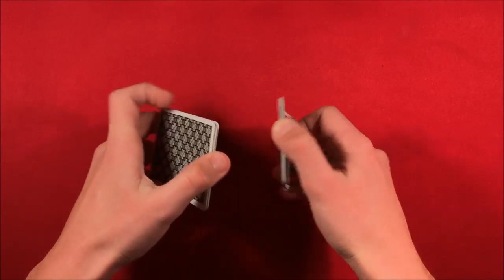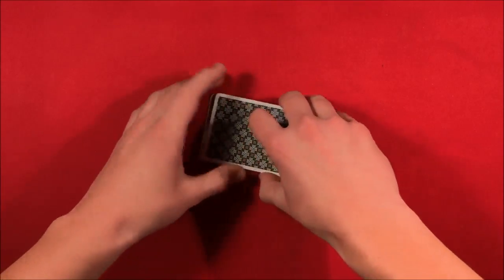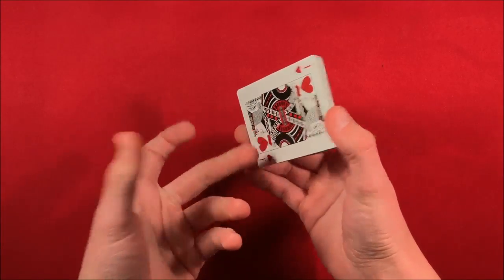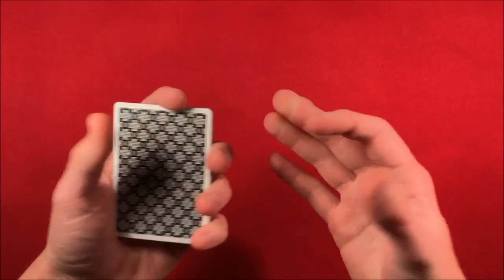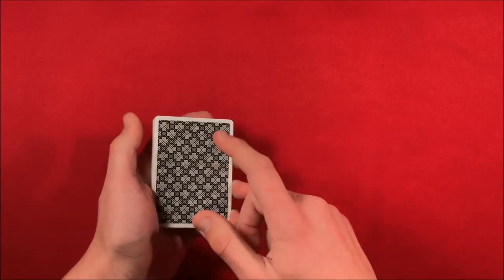So the whole thing is you need to know the bottom card. In this case, it's the jack of hearts. The spectator can really pick any number over half of the amount of cards in here. So in this case you have 13. Let's say they pick the number 9, so it's over half.